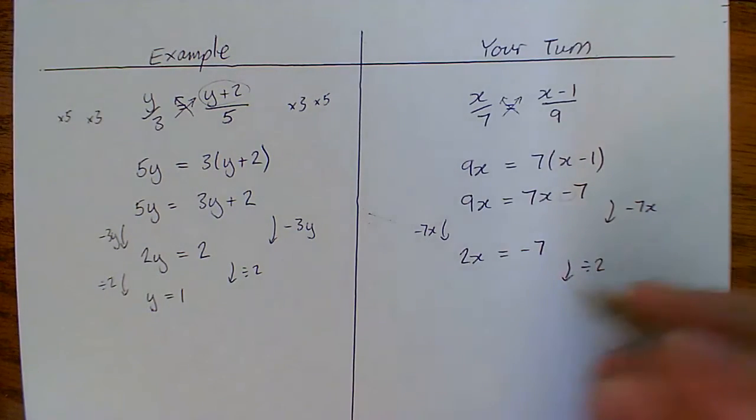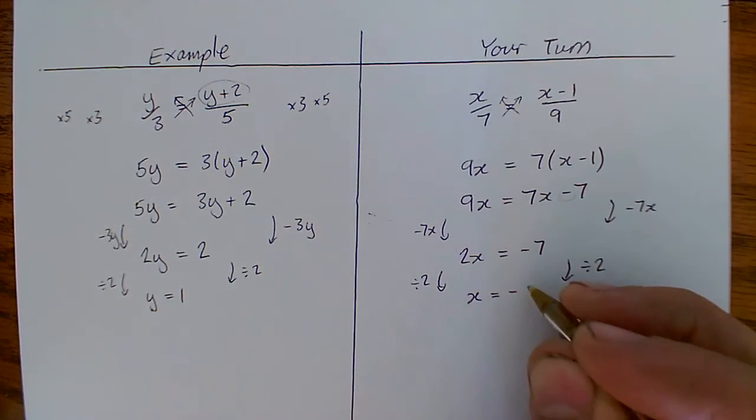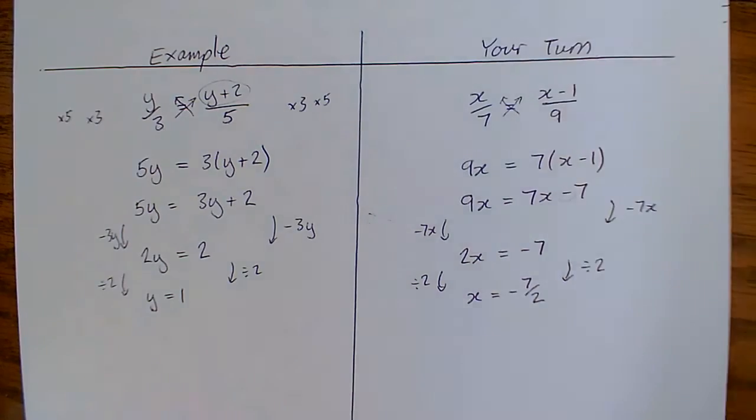Divide both sides by 2. And my easy way to write that is minus 7 over 2. And we're done.